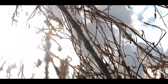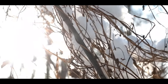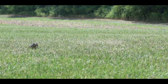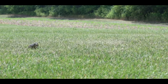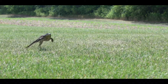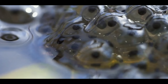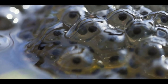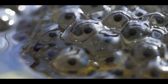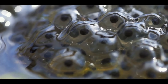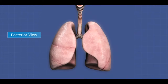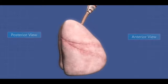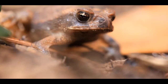Most frog species have webbed feet which aid in swimming and jumping. Frogs undergo metamorphosis, starting as tadpoles with gills and a tail, and later developing into adults with lungs and legs.